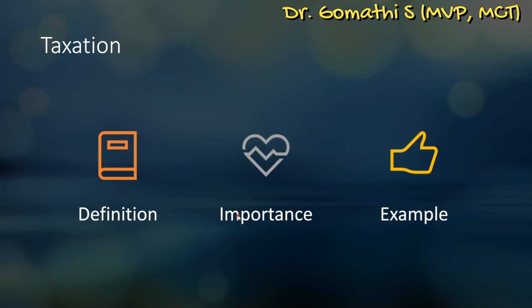Next comes taxation. Taxation is the process of managing tax-related activities and ensuring compliance. It includes setting up tax codes, calculating taxes, and generating tax reports. For instance, different tax rates for products or services can be configured using tax codes, ensuring accurate tax calculation and compliance with tax regulations.